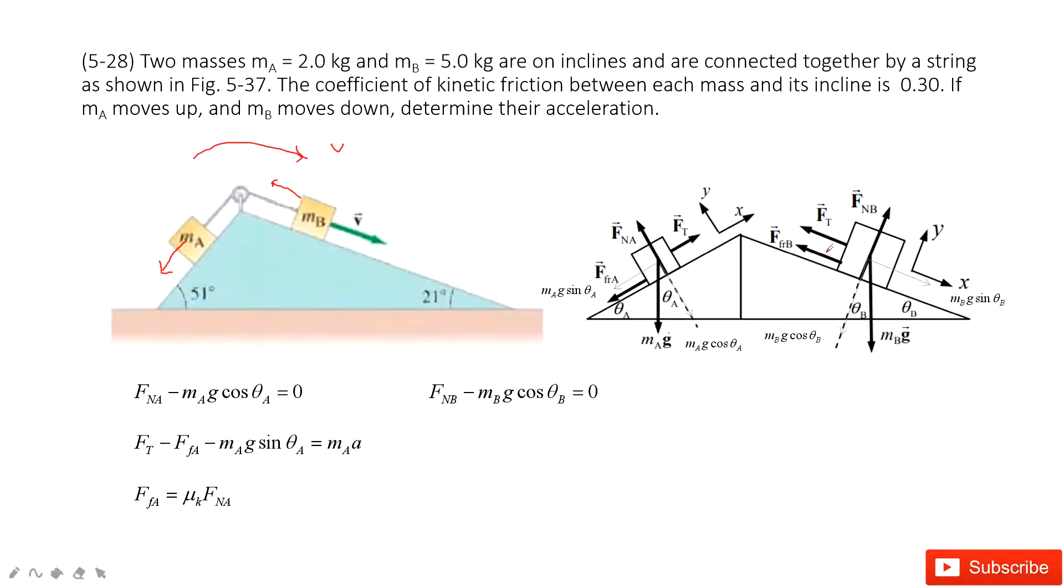Then look at the x-component. We have mg sin theta minus the tension minus the friction equals the mass times acceleration. And then still, same thing, the friction for B is the coefficient times the normal force.